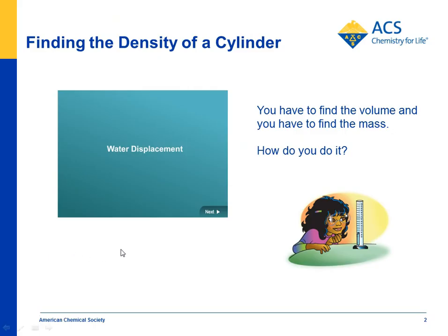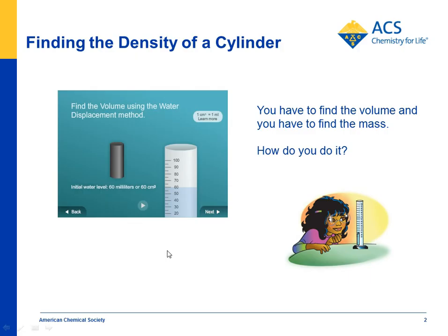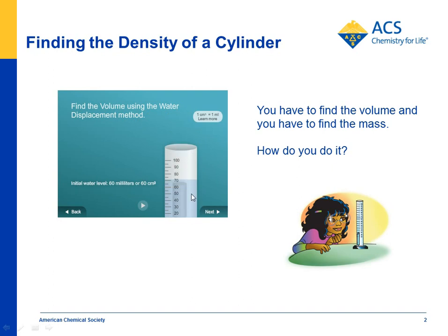In the lesson, there's a simulation of how to do the water displacement method. The first thing you need to do is get an initial volume of water — in this case, 60 milliliters in a graduated cylinder. Then you take the rod and place it in the water, and the volume of water goes up. It's displaced.